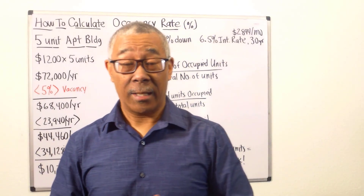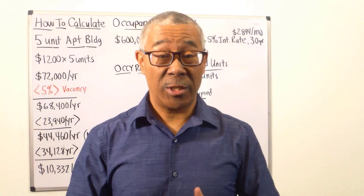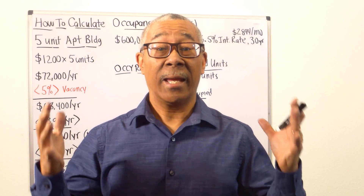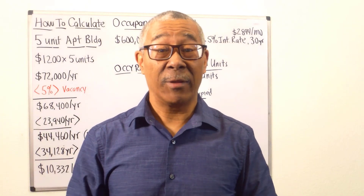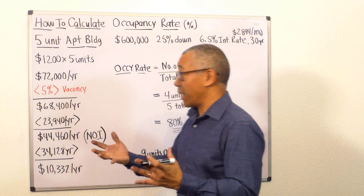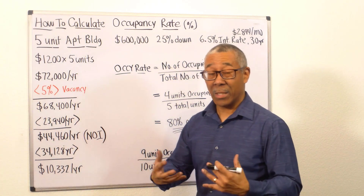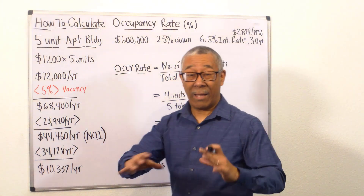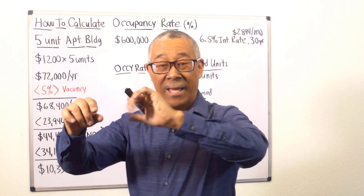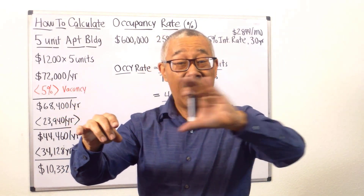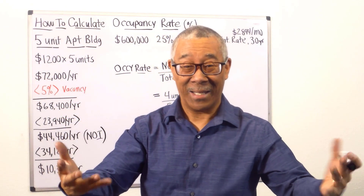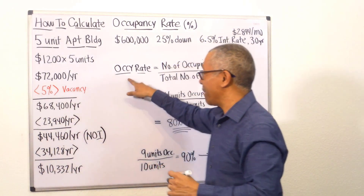How to calculate occupancy rate on a commercial property. I'll use my example of a five unit apartment building. Occupancy rate pretty much is: if you have a ten unit apartment building and nine are occupied, that means you're 90% occupied. So here's an example.